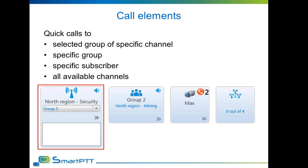The dispatcher can select any group with a drop-down list in the middle of the element. All Call is also available for selection. The speaker icon in the top right corner provides quick access to the mute feature — if you do not want to hear the channel, tap this button and the speaker will become crossed, meaning the channel's sound is muted. The context menu button in the bottom right corner provides access to the familiar context menu, containing shortcuts to most radio network options, such as radio check, block and unblock radio, find on map, and properties window.